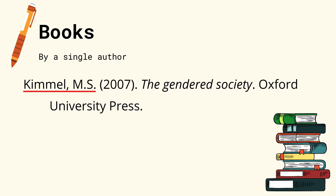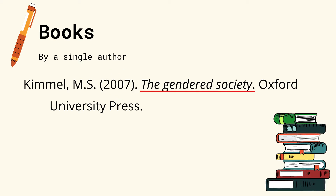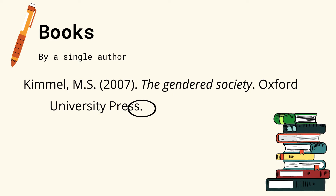For books by a single author, write the author's last name first, and then the first and middle initial separated by a comma and period, then the year of publication in open and close parentheses, period again, the title of the book in italics, period again, lastly the publisher's name, and then end it with a period. All elements are separated by a period, and proper capitalization is observed. In writing the title, only the first letter of the title is in capital letter; the rest of the letters must be small and italicized.